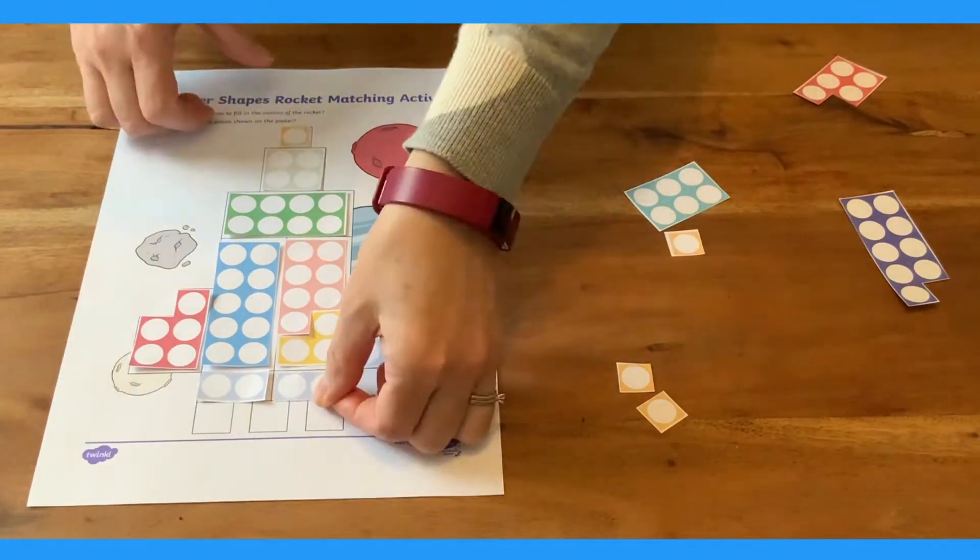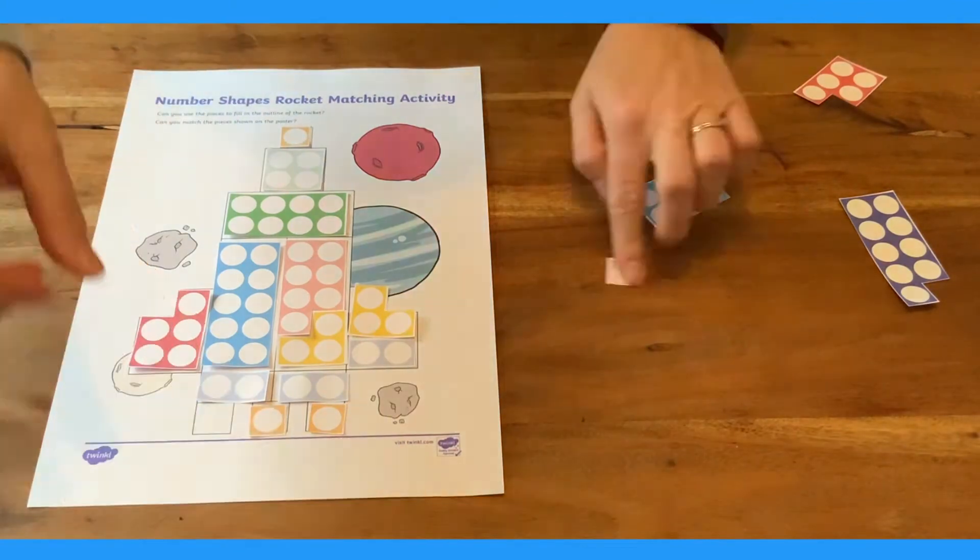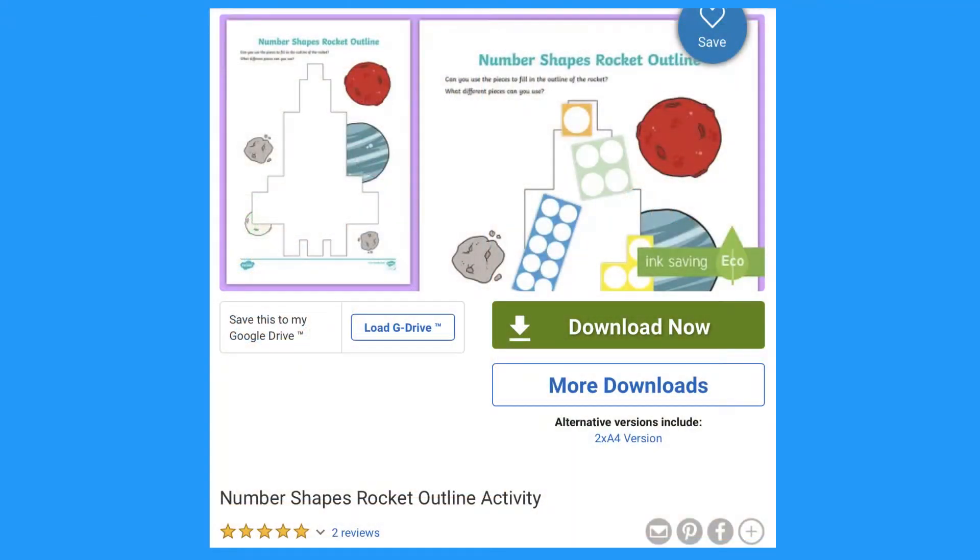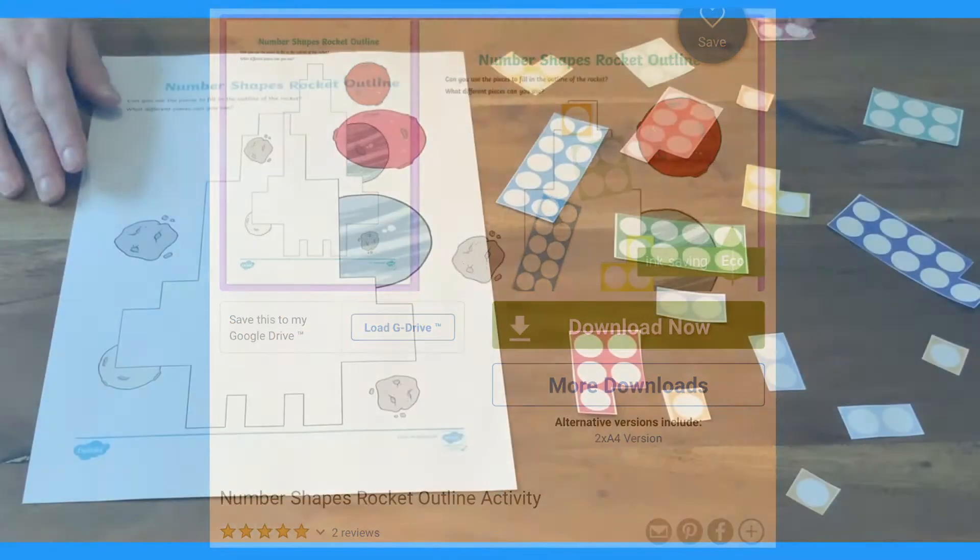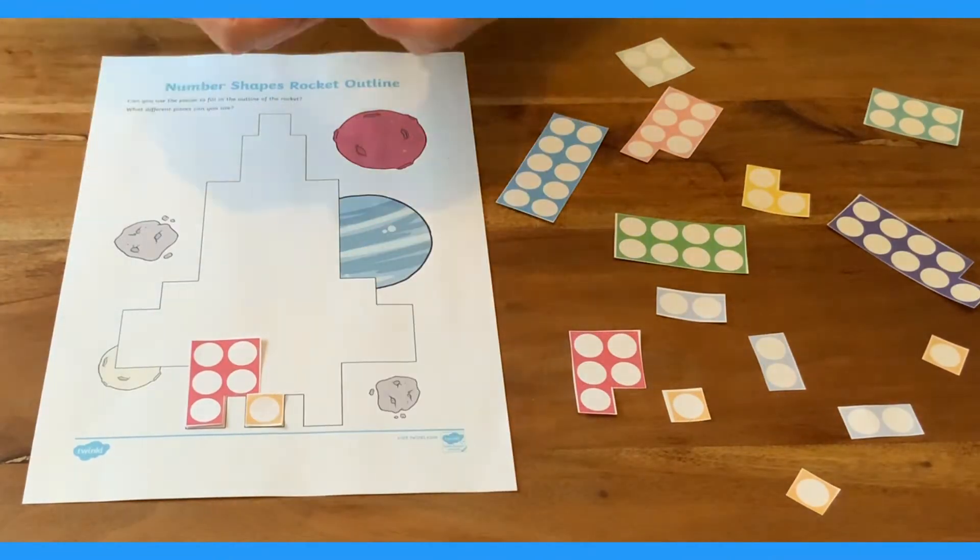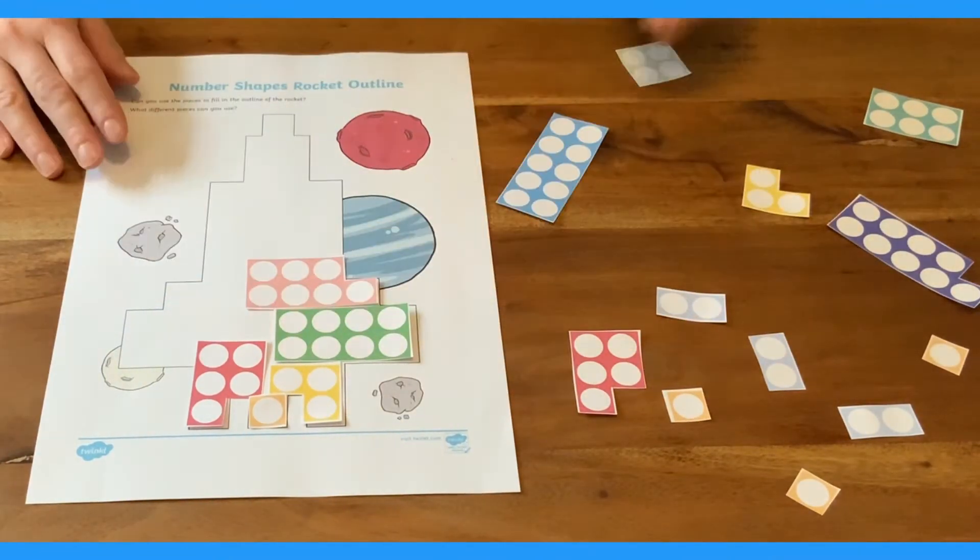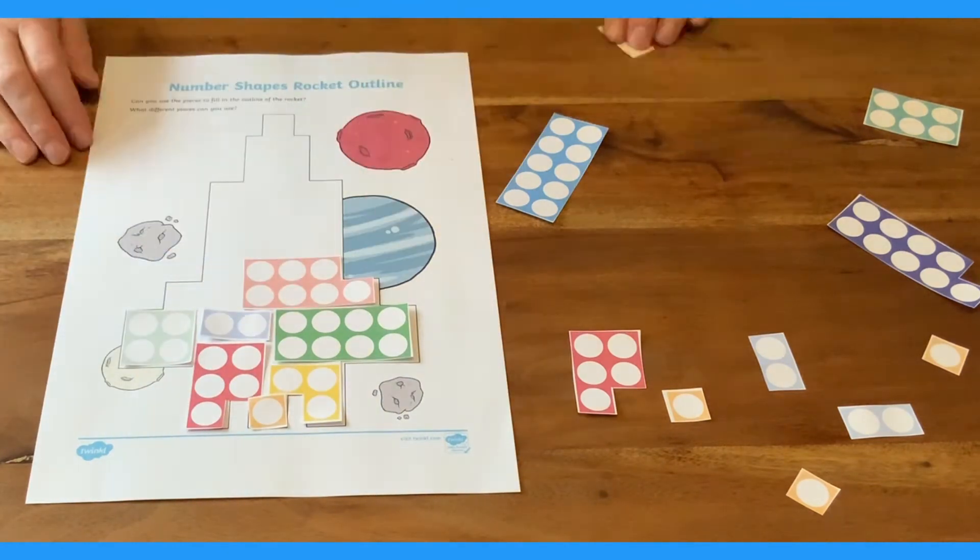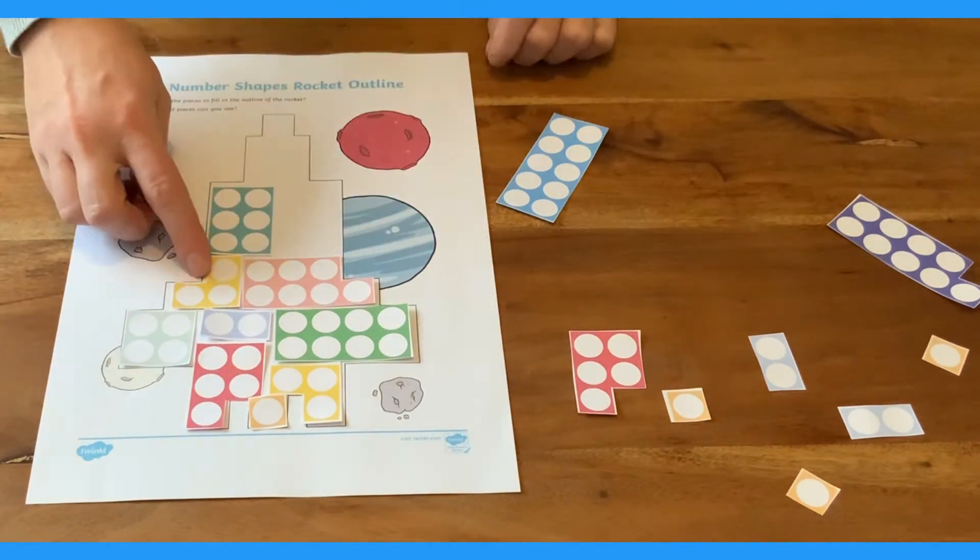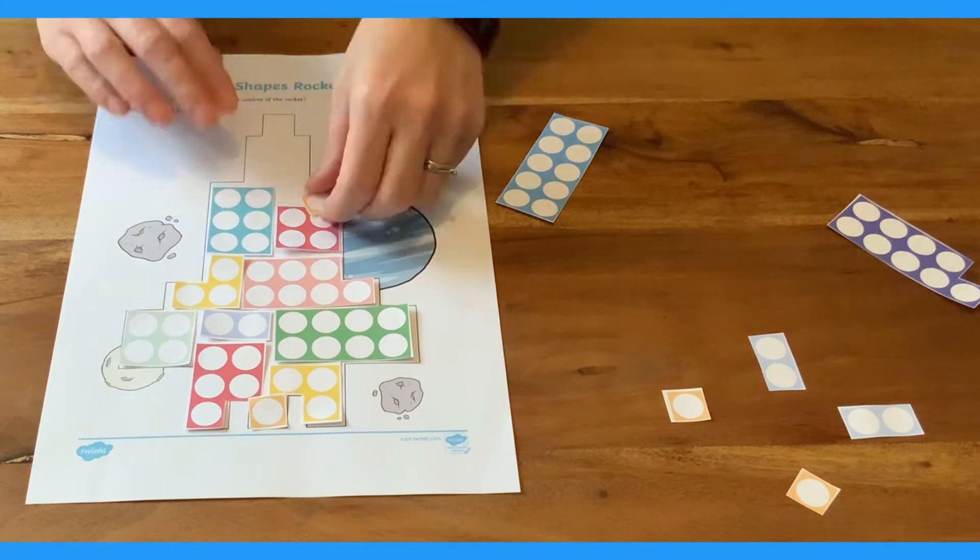It helps them to make comparisons between the different number shapes too. This version of the rocket is a little more tricky. There are no separate shape outlines so children must investigate what pieces can go where. There are lots of different ways that it can be done. Children will enjoy experimenting with the different possibilities.